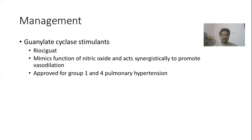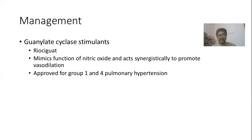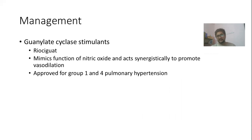Soluble guanylate cyclase stimulants are a newer drug group that enhance the function of nitric oxide and act synergistically with it to enhance vasodilatation. These are approved for group 1 and group 4 pulmonary hypertension but are not used for every case of COPD. These vasodilator drugs are for selected patients only. Symptomatic management with diuretics and supportive treatment for right-sided heart failure is the same for all causes of cor pulmonale.